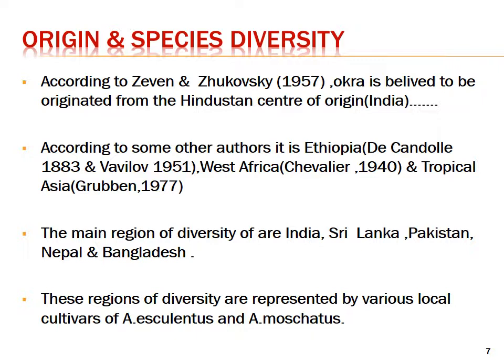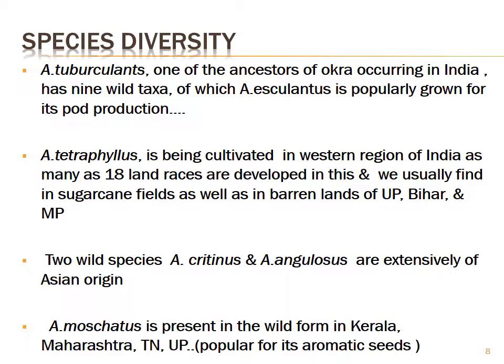These regions of diversity are represented by various local cultivars of Abelmoschus esculentus and Abelmoschus manihot. Abelmoschus tuberculatus is considered among the ancestors of Okra. According to India, it has nine wild taxa, of which Abelmoschus esculentus is popularly known for its pod production. Abelmoschus tetraphyllus is cultivated in western regions of India, with as many as 18 land races found in sugarcane fields and farmlands of Uttar Pradesh, Bihar, and Madhya Pradesh.